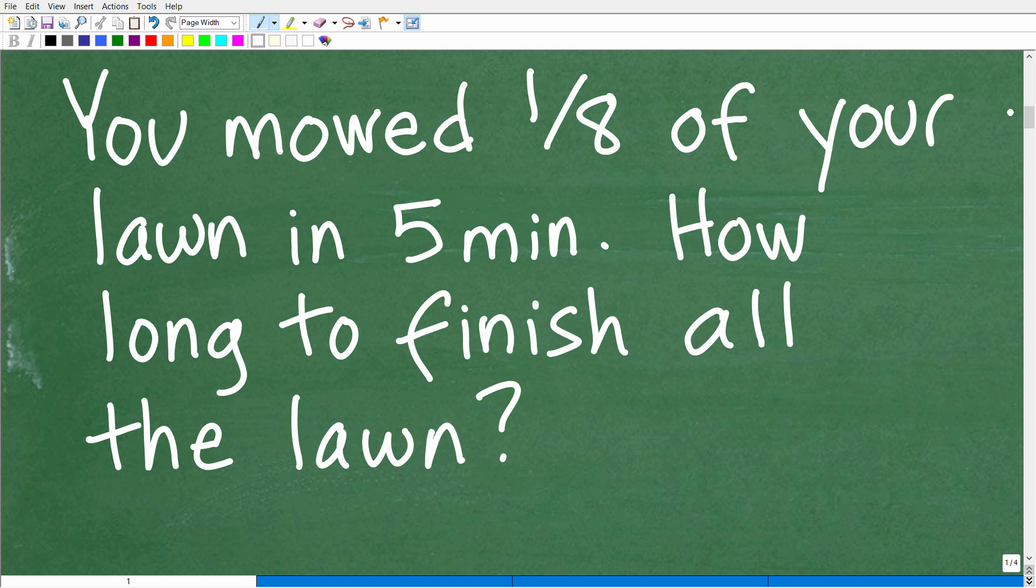So one more time, you mowed one-eighth of your lawn in five minutes. How long to finish the entire lawn? The correct solution here is 40 minutes. Now if you got this right, well you definitely get a happy face and an A+. And if you didn't get this right, well that's not the case. You likely been away from math for a long time.